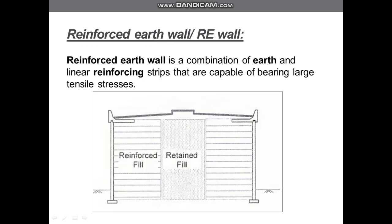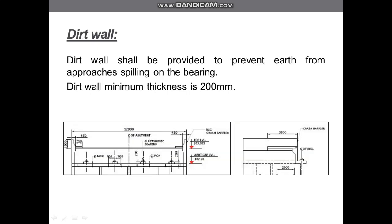Next is the reinforced earth wall, or RE wall. In this type, the earth is reinforced by geotextiles, strips, bars, etc. It is very cheap and is used where the length of the required wall is more. Generally it is provided for the approaches of flyovers — VUP (vehicular underpass), CUP (cattle underpass), and PUP (pedestrian underpass).